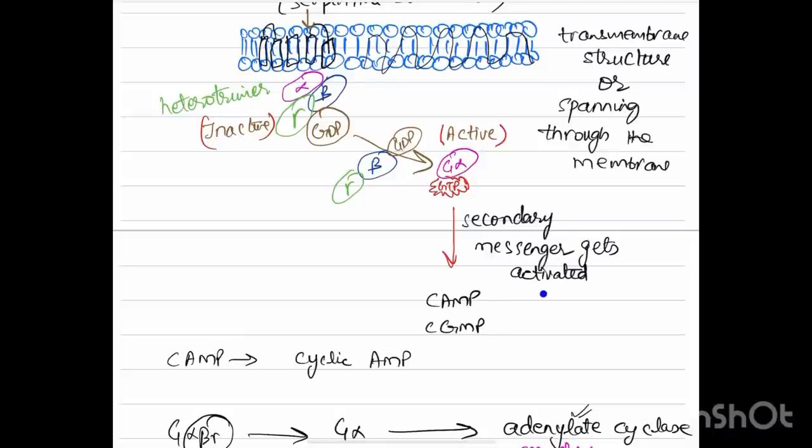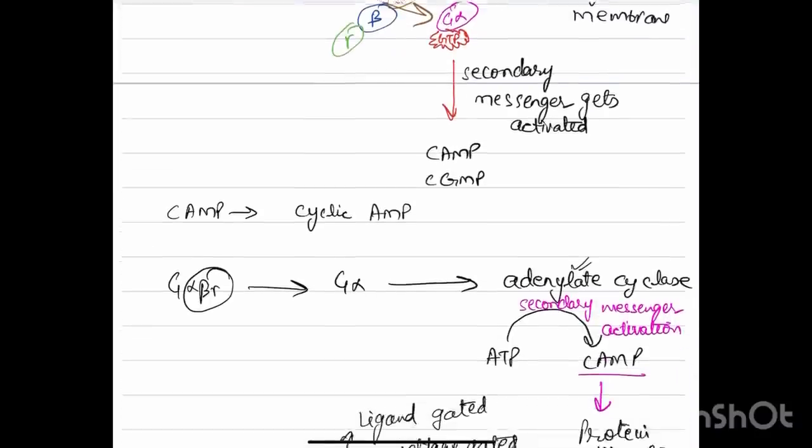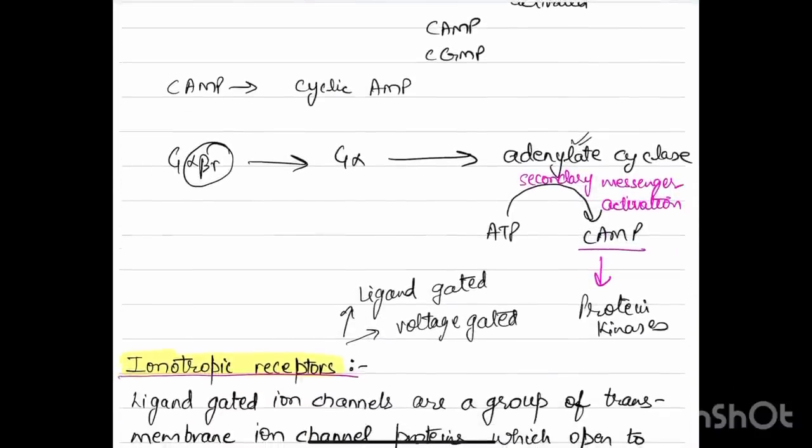cAMP or cyclic AMP is the most abundant secondary messenger. G-alpha-beta-gamma in its inactive form is bound to GDP. With the exchange of GDP with GTP, G-alpha becomes active and activates the enzyme adenylate cyclase. This enzyme converts ATP to cAMP and secondary messenger activation takes place. In turn, cyclic AMP activates downstream protein kinases which can then undergo metabolic reactions.